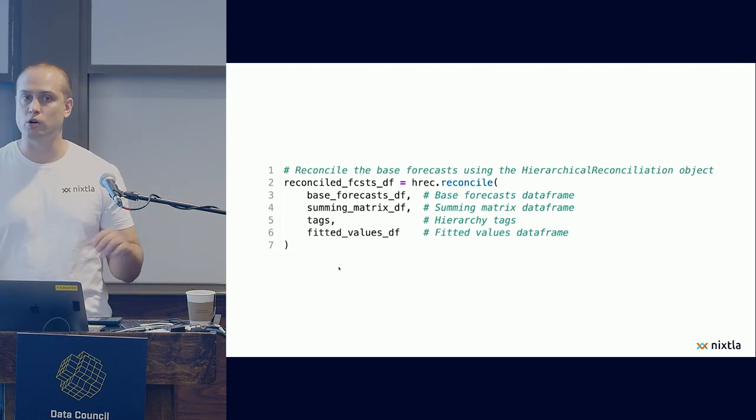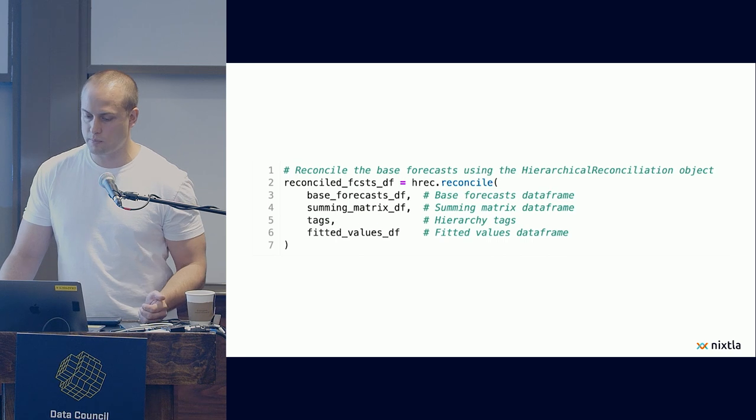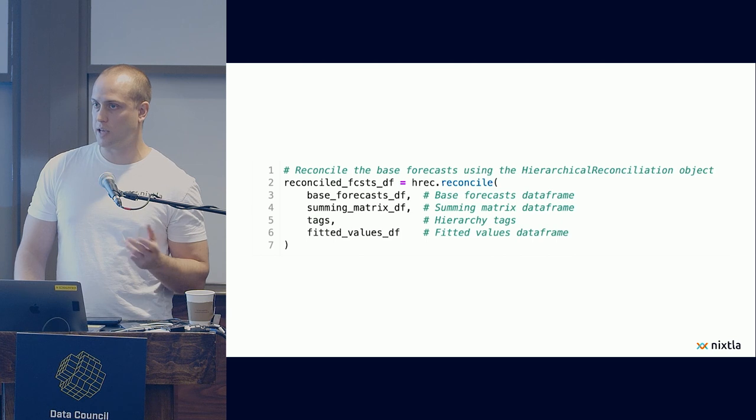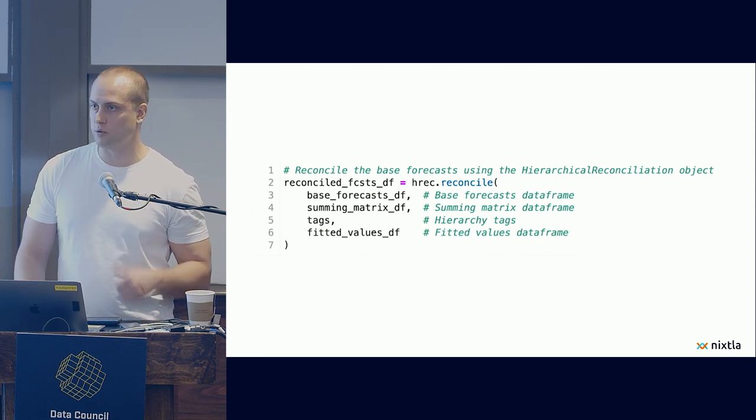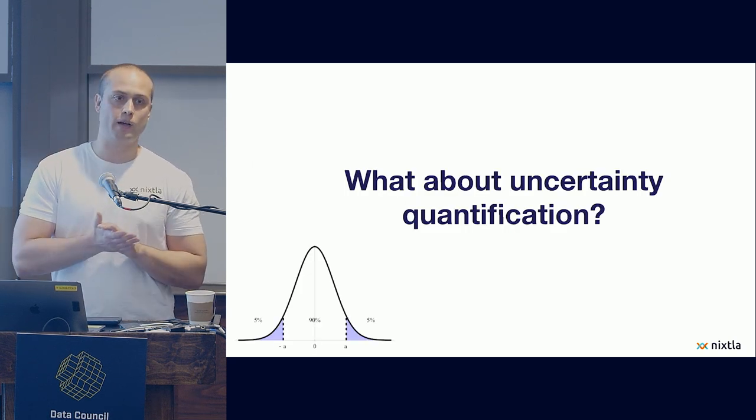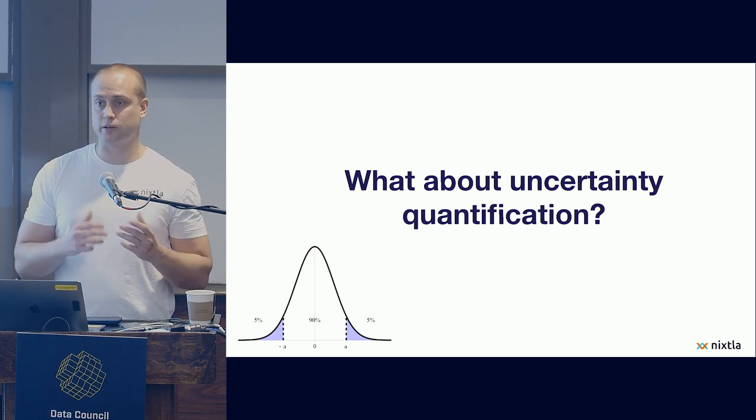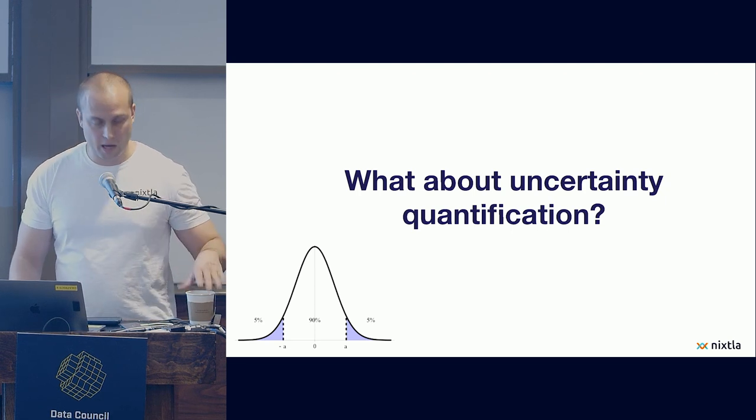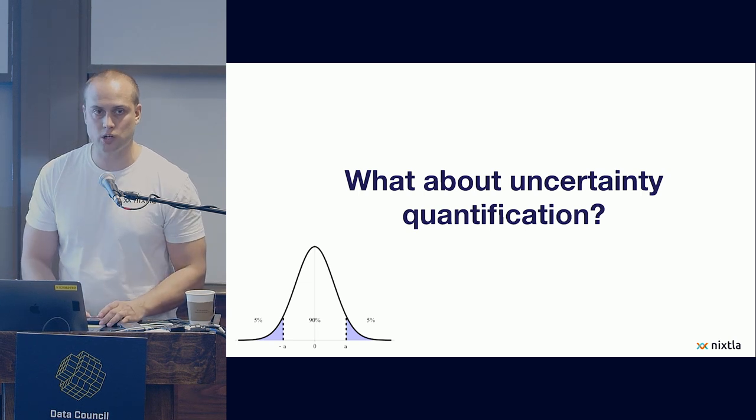And after that, we just call the reconcile method on the hierarchical reconciliation object by passing the base forecasts that we created, the summing matrix H that we got from the last step, the tags, and the fitted values that we got during the training set. And after that, we would have a completely reconciled forecast that minimizes errors and also minimizes variance, and that would make, hopefully, the president very happy and also the governors because everything would match up.